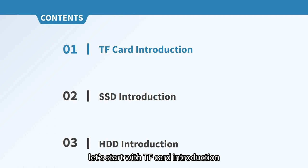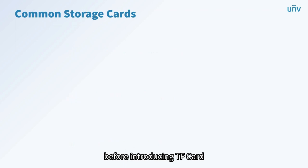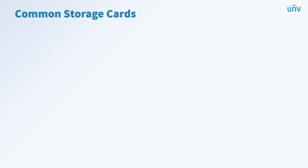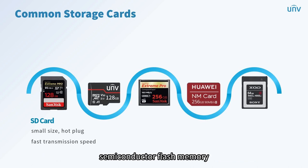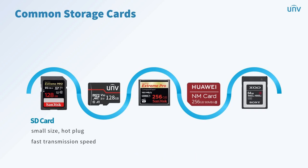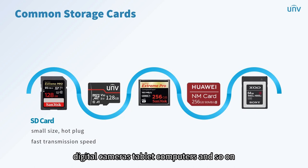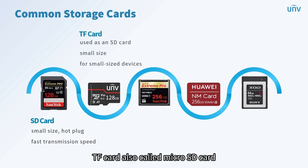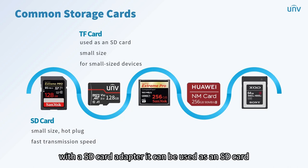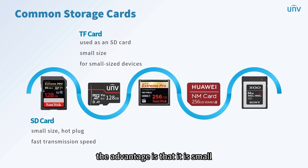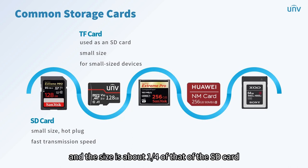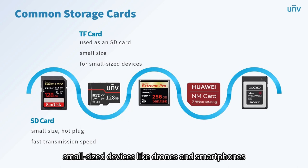Let's start with TF card introduction. Here are five commonly used card types. SD card is a new generation of memory device based on semiconductor flash memory, with advantages of small size, fast data transmission speed, and hot plug. It is widely used in portable devices such as digital cameras and tablet computers. TF card, also called micro SD card, can be used as an SD card with an SD card adapter, but has relatively lower speed and poor stability. Its size is about one fourth of that of the SD card, and it is generally selected for small devices like drones and smartphones.